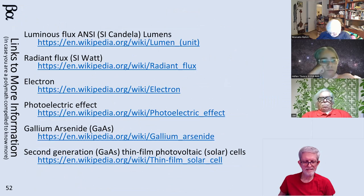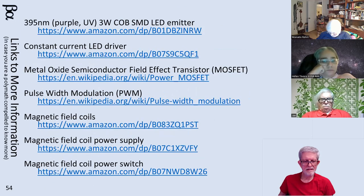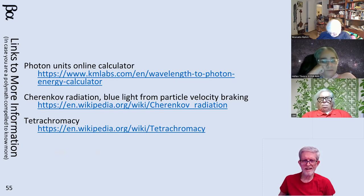There are lots of background reference links. Another form of breaking radiation, for those not aware, is Cherenkov radiation — that blue glow you get out of nuclear reactors, and also from neutrinos at the South Pole. And for those who don't know about people that have a fourth receptor in their retinas: tetrachromacy.